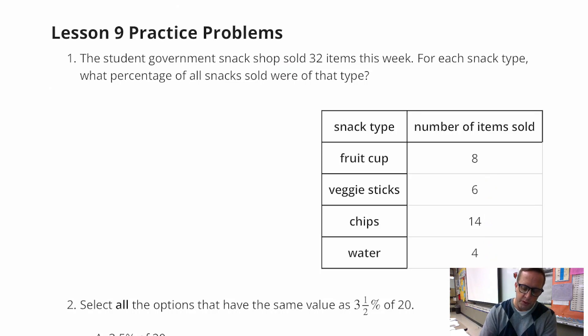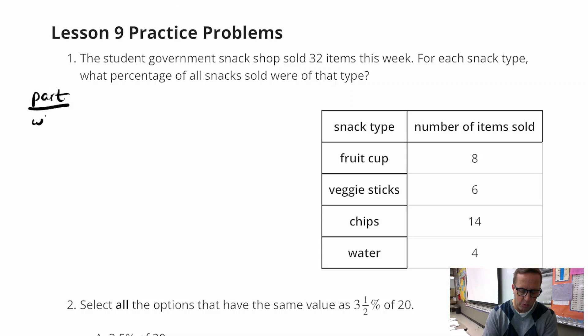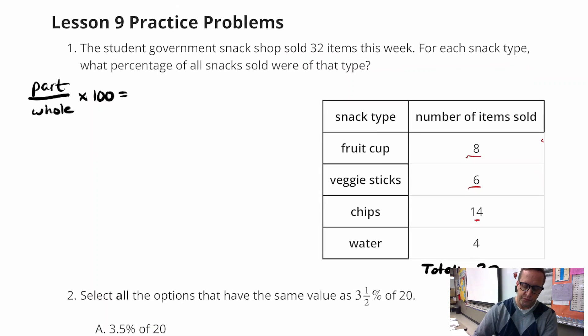So what we're going to do is to find a percent, we're going to do the part divided by the whole, and then multiply that by 100, or in other words, move the decimal over two places. Now all these numbers right here, 8, 6, 14, these are all parts. We need to know what the whole is. We need to know what the total. So you just add them all up: 8, 6 plus 14, that's 20, 28, 32. So everything adds up to 32. There's 32 items that were sold.